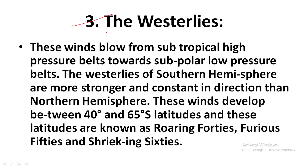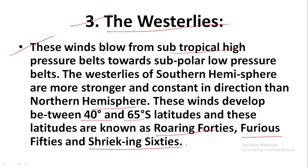Number three: the westerlies. These winds blow from the subtropical high pressure belt towards the subpolar low pressure. The westerlies of the southern hemisphere are stronger and more constant in direction than those of the northern hemisphere. These winds develop between 40 degrees and 65 degrees south latitudes, and these latitudes are known as the Roaring Forties, Furious Fifties, and Shrieking Sixties.